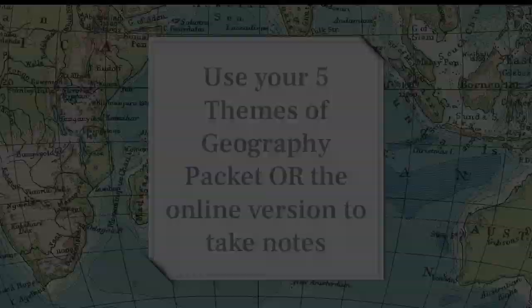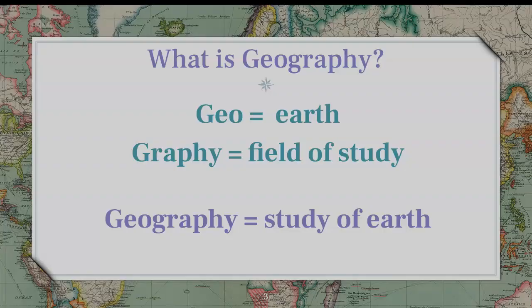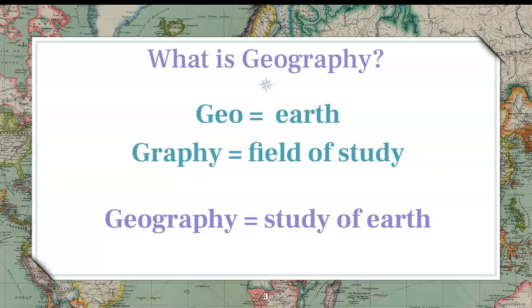There are five themes in total of geography that you need to know this year. Before we get to those, we want to talk about what is geography and what does geography mean? The prefix 'geo' stands for earth, and the suffix 'graphy' stands for study of. So if you put those together, you have geography, which stands for the study of earth — what the landforms look like, how the earth is shaped, and all that.